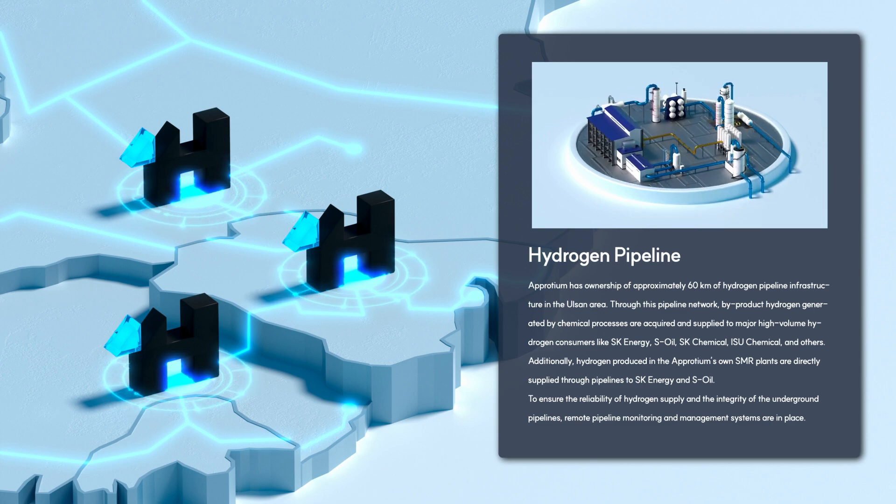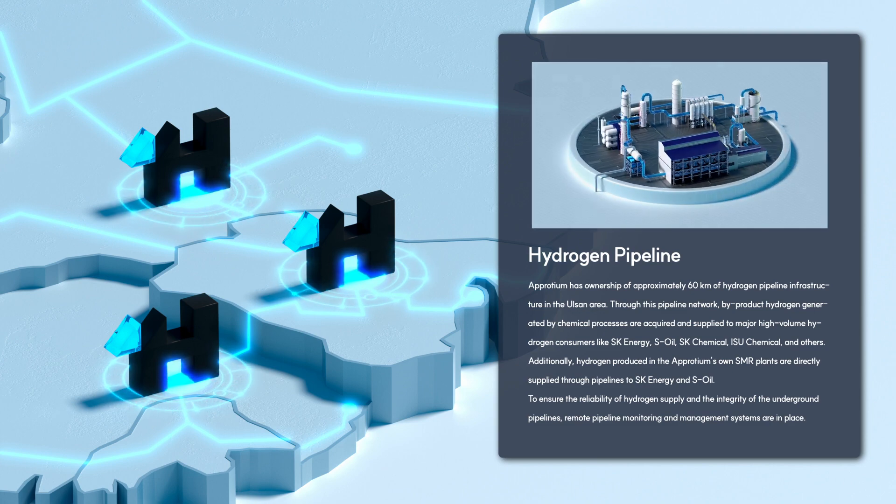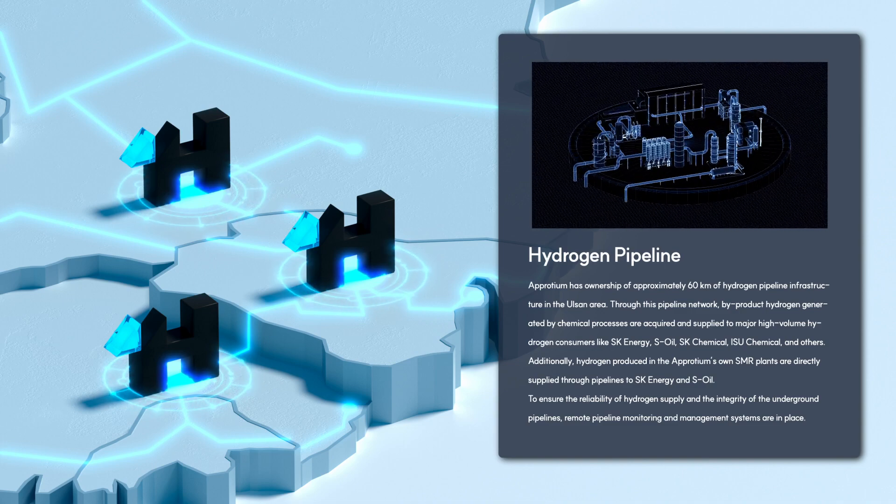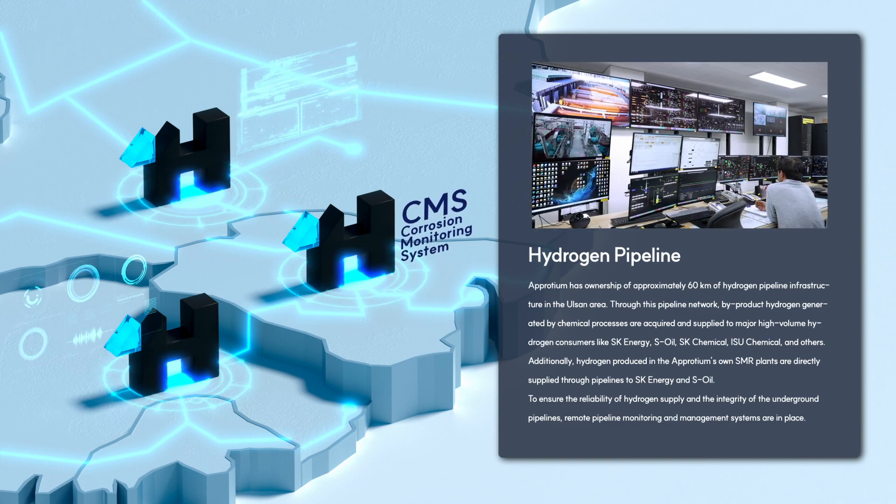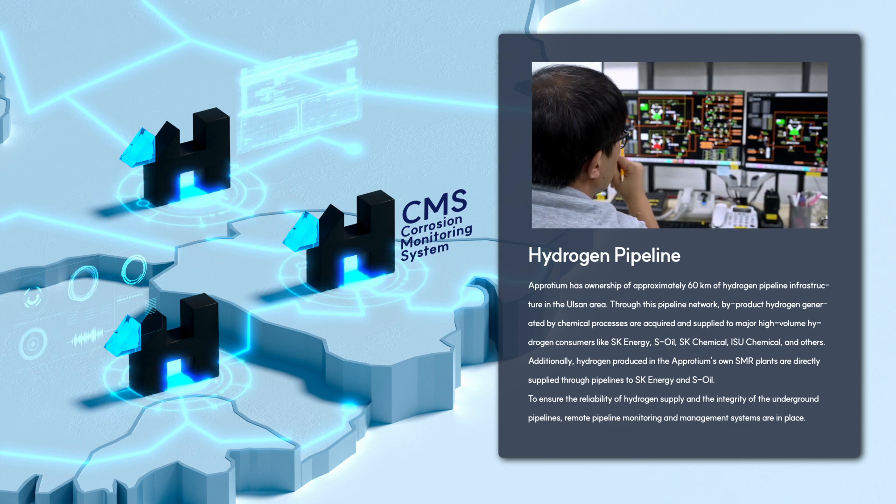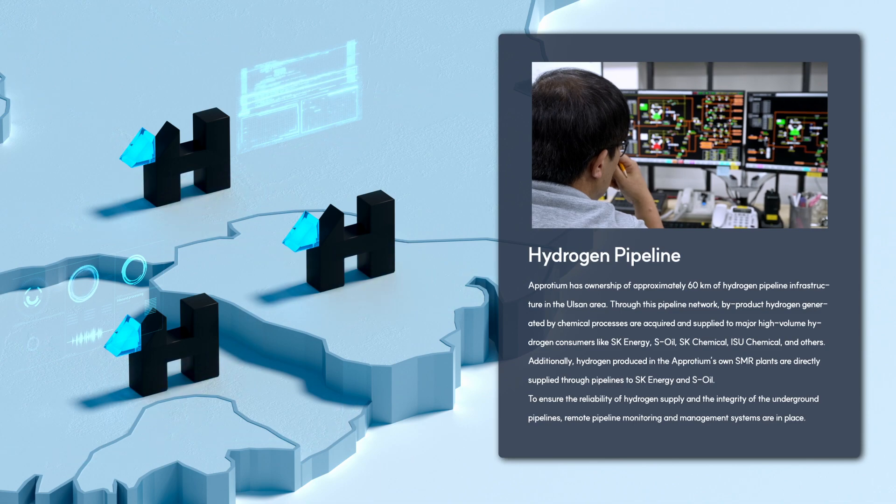Additionally, hydrogen produced in Aprodium's own SMR plants is directly supplied through pipelines to SK Energy and S-Oil. To ensure the reliability of hydrogen supply and the integrity of the underground pipelines, remote pipeline monitoring and management systems are in place.